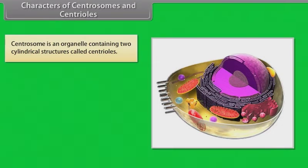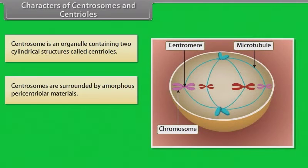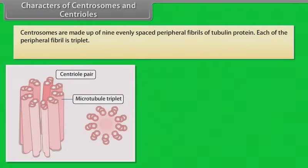Characters of centrosomes and centrioles: Centrosome is an organelle containing two cylindrical structures called centrioles. Centrosomes are surrounded by amorphous pericentriolar materials. Both centrioles in a centrosome lie perpendicular to each other, and each has an organization like a cartwheel. Centrosomes are made up of nine evenly spaced peripheral fibrils of tubulin protein, and each peripheral fibril is a triplet.